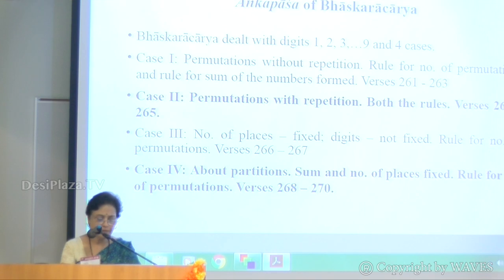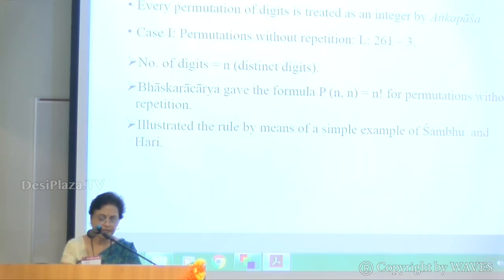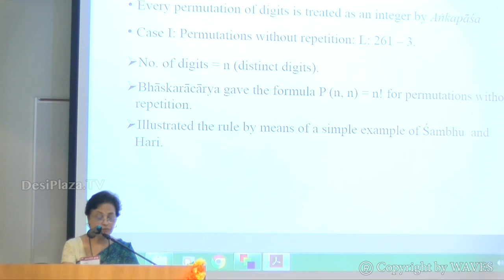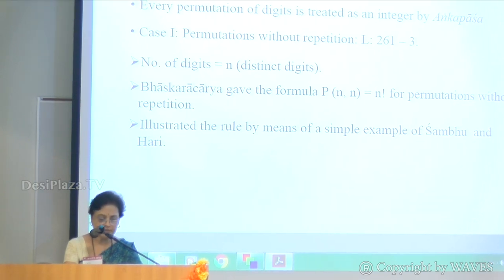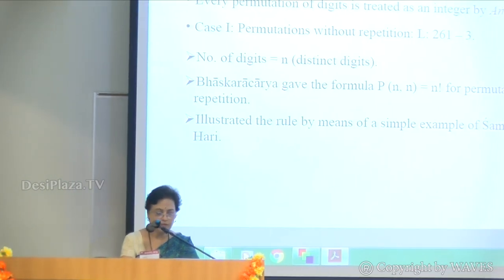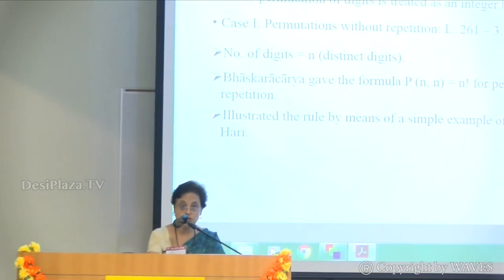Every permutation of digits is treated as an integer by Anka Pasha to solve problems. These problems are of the kind: to find the sum of all integers produced from the given set of digits. Although Bhaskaracharya gave the rule for number of forms, he did not think it necessary to give the rule for Prasthara. I intend to discuss here only two cases in detail in which Bhaskaracharya used groups.